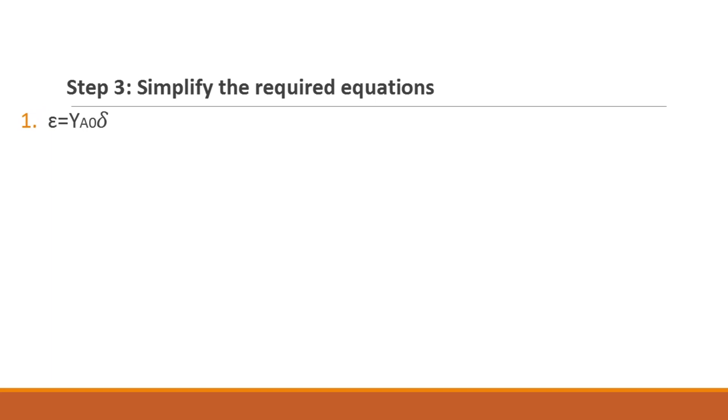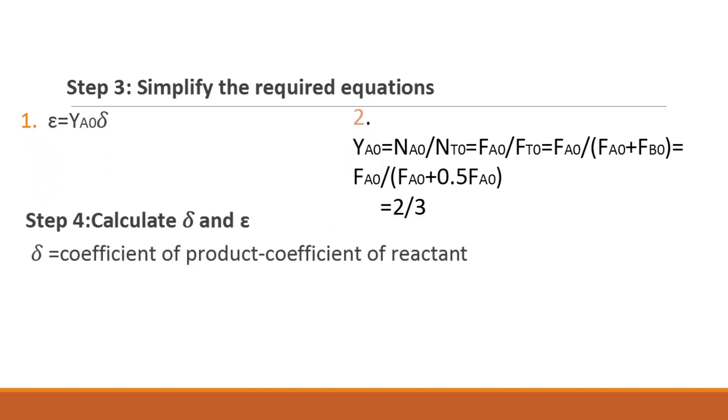The third step is to simplify the required equations then we further solve it, hence the value for epsilon and delta is minus one-third and minus one-half respectively.